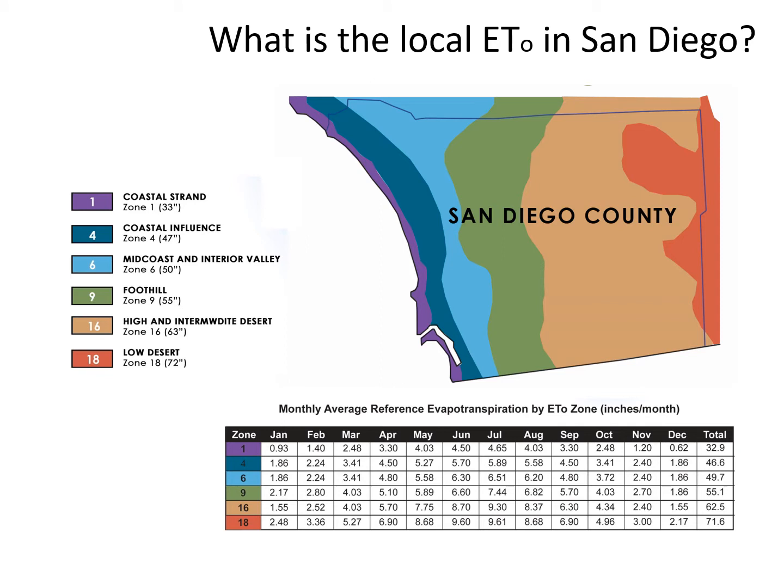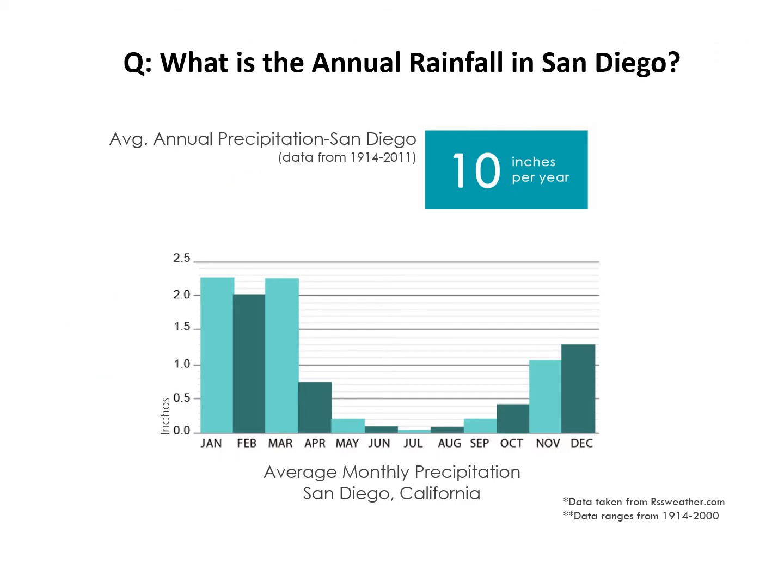The ETo in San Diego — that's our evapotranspiration rate, or how much water plants sweat — varies depending on whether you're close to the coast or inland. Along the coastal strand we could expect a patch of healthy cool season turf to use about 33 inches of water, yet if we get out into the Poway Valley foothill area, that same turf uses about 55 inches of water a year. In our region we average about 10 inches of rain per year, mostly in mid-winter and early spring, with very little through the summer months.